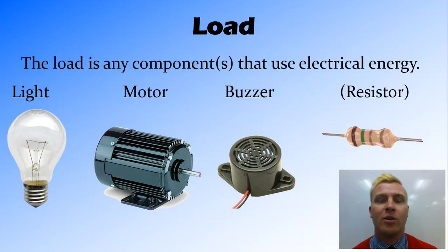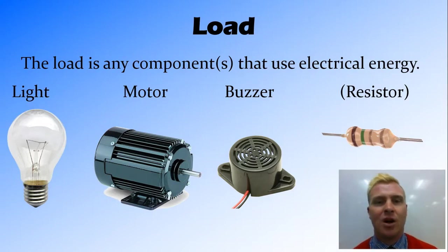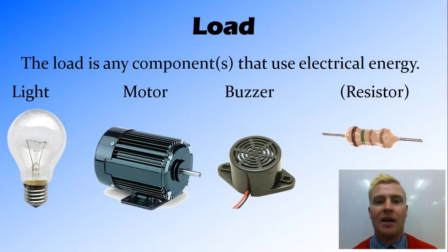The next component of the circuit is called the load. This is any component that uses that electrical energy — so this could be a light, an electric motor, or a buzzer. In some cases it's a resistor, unless you're trying to create heat, which is another interesting thing — but we'll get into that later. Basically, anything that uses this power or energy to do work is referred to as the load. You can have multiple loads: multiple lights, multiple motors, a motor and a buzzer, all these sorts of things.